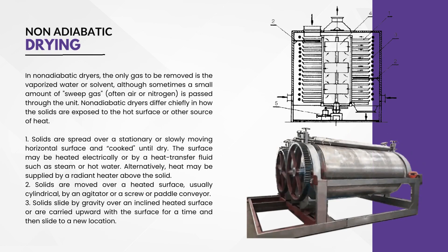Now moving on to non-adiabatic dryers, which are the other type. Non-adiabatic dryers are a type of indirect or contact drying where heat is supplied to the material to be dried by hot air or another external heat source rather than a hot gas. The vapor produced by evaporation of water or solvent is removed by vacuum or by a small amount of sweep gas. Non-adiabatic dryers have the advantage of avoiding oxidation, contamination, or dilution of the material by drying gas.